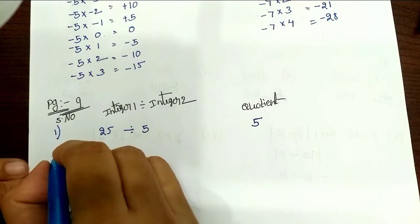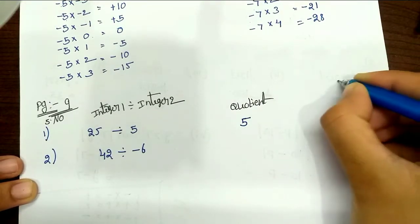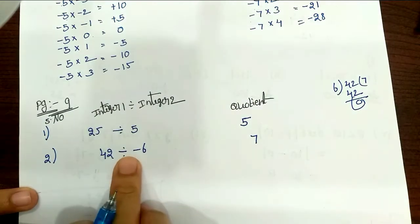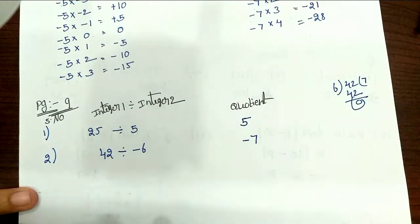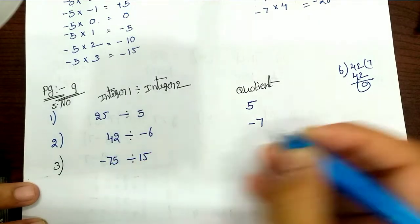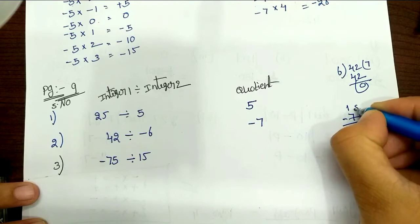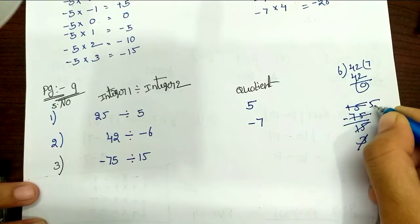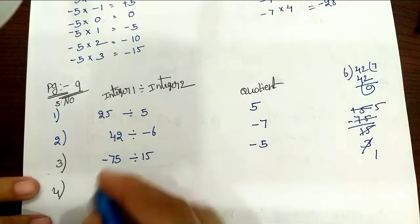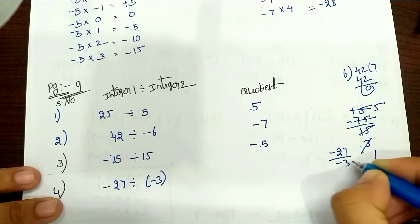Second one: 42 divided by minus 6. We divide 42 by 6; 6×7=42, so remainder 0, quotient 7, but here we have minus, so two minuses cancel — quotient is minus 7. Third one: minus 75 divided by 15. 75 divided by 15 gives 5; but here we have minus, so quotient is minus 5. Fourth one: minus 27 divided by minus 3.